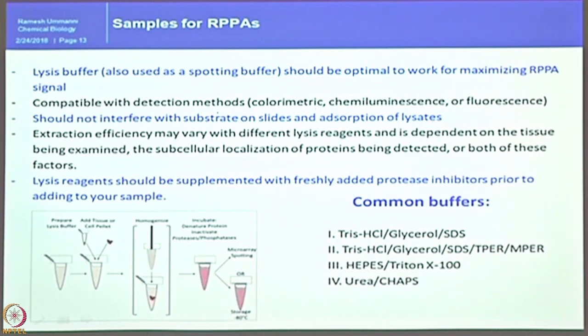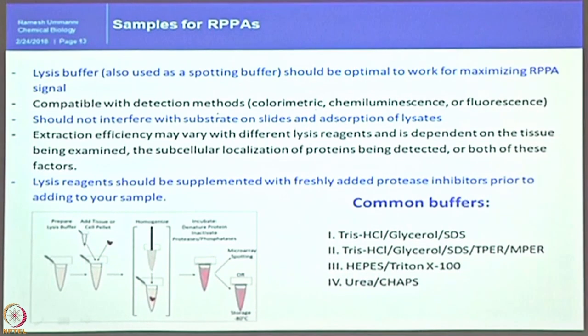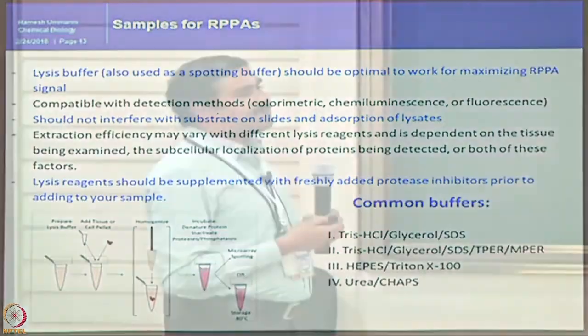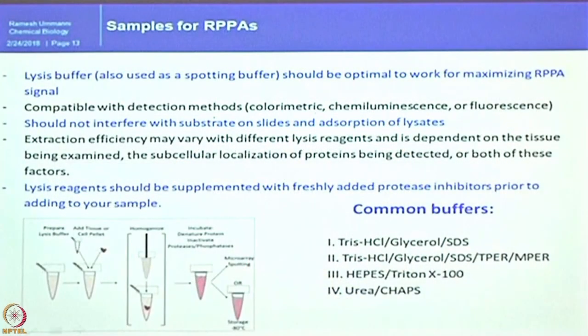This critical point highlights what kind of buffer can be chosen — not all proteins in all samples can be solubilized by a single buffer. This is a major limitation in the array approach. The lysis buffer should be optimal to maximize the RPPA signal. It should not interfere with the visualization of signals using any labeling system, whether secondary antibodies like IR labeling, HRP label, alkaline phosphatase label, or directly Cy3 or Cy5 label. It should also be compatible with detection methods like colorimetric, chemiluminescence, and fluorescence.